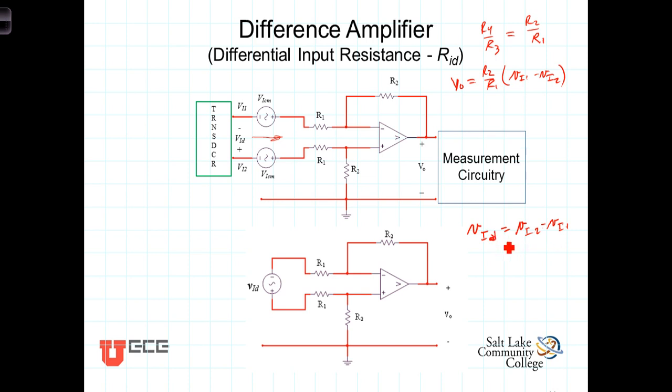Now to determine that input resistance, we'll call it R sub ID. We'll define R sub ID to equal the ratio of that differential input voltage VID divided by the current, lower case I N.